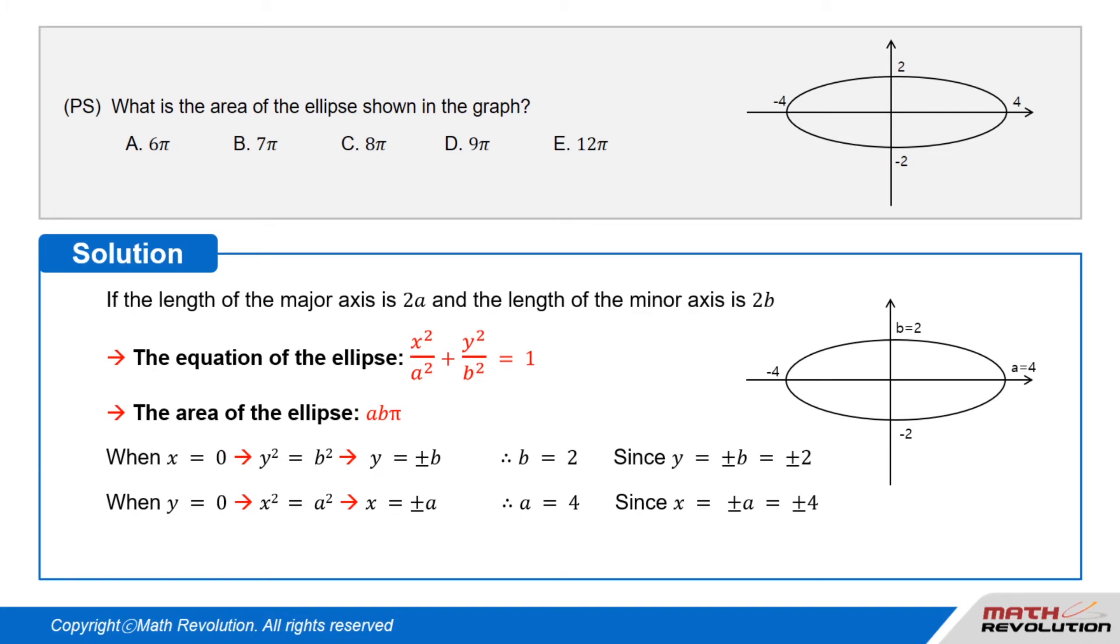Also, when y = 0, we get x² = a², or x = ±a. Since x = ±4, we have a = 4.